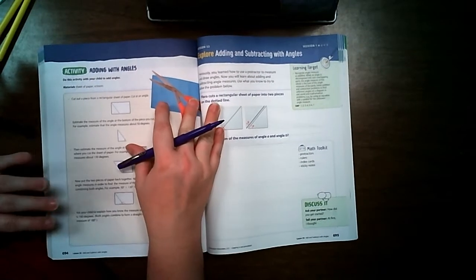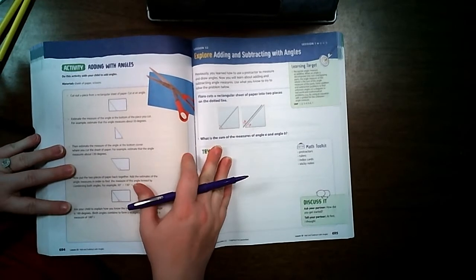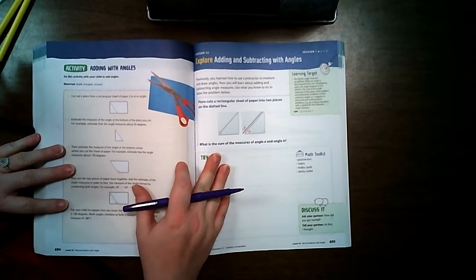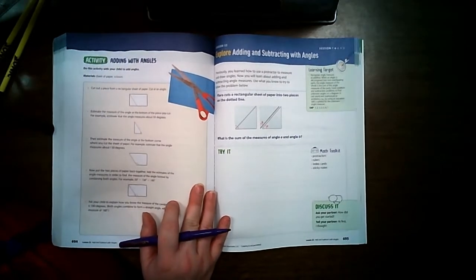Welcome back students. We are working on Lesson 32, Session 1. Turn to page 695 in your Volume 1 Math Book. And today we're going to be learning about adding and subtracting angles.